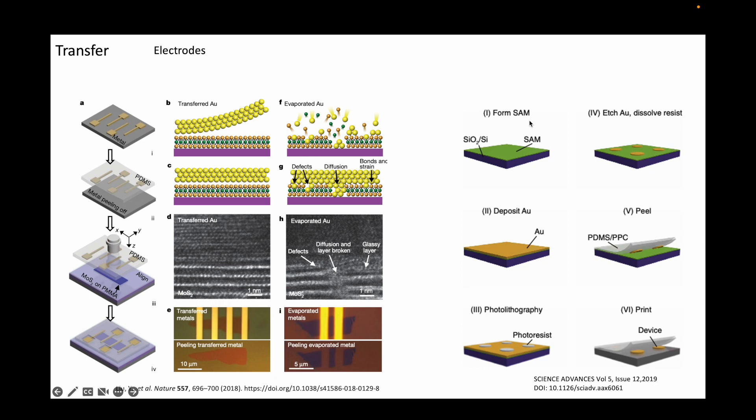On the right, you see a similar method where a surface-assembled monolayer is used as a coating on the substrate to allow the metallic layers to be peeled off easily.